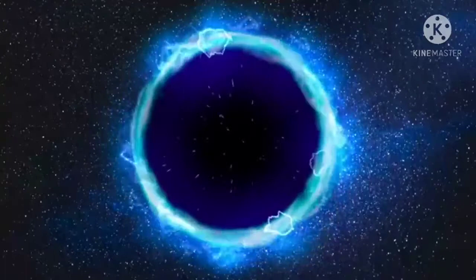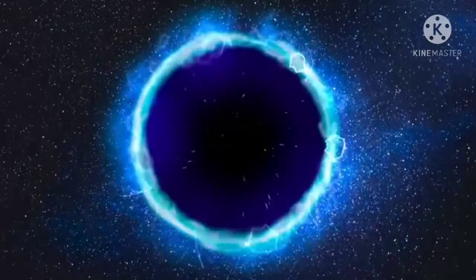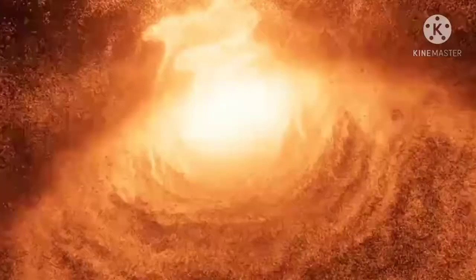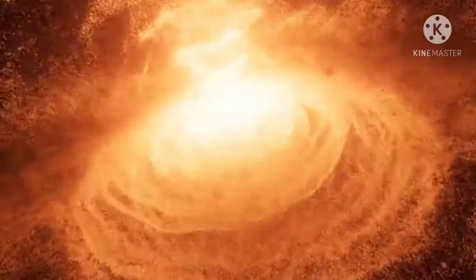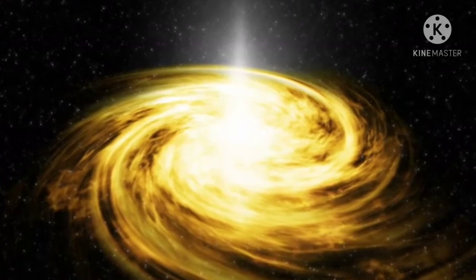How do black holes form? Scientists think the smallest black holes formed when the universe began. Stellar black holes are made when the center of a very big star falls upon itself or collapses. When this happens, it causes a supernova. A supernova is an exploding star that blasts part of the star into space. Scientists think supermassive black holes were made at the same time as the galaxy they are in.